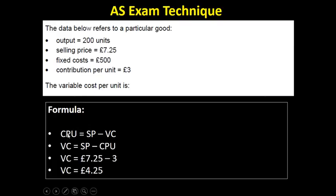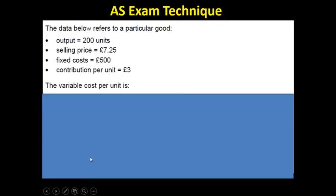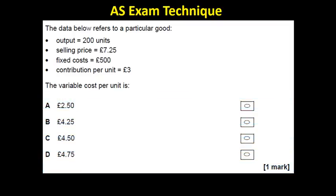So let's have a look. Contribution per unit, I know my formula is selling price minus variable cost. So obviously if I rearrange that, the variable cost is going to be equal to the selling price minus the contribution per unit. And then it's just a nice easy calculation. 7.25 minus 3. So I know the answer is 4.25 already. All I need to do is just double check that it's there. And there it is, 4.25 and so I can move on to the next question.